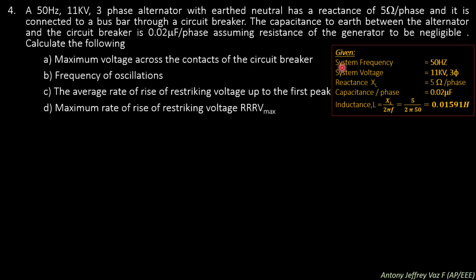Given: system frequency is 50 Hz, three-phase voltage is 11 kV, reactance XL is 5 ohms per phase, and capacitance per phase is 0.02 microfarad. Converting reactance to inductance using L = XL / (2πf): L = 5 / (2π × 50) = 0.01591 Henry.